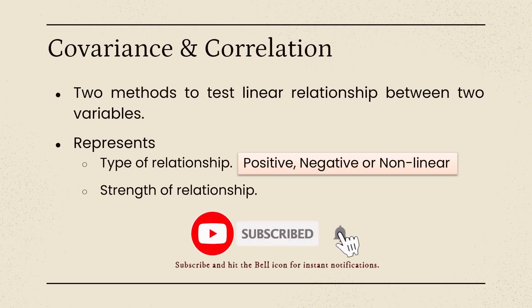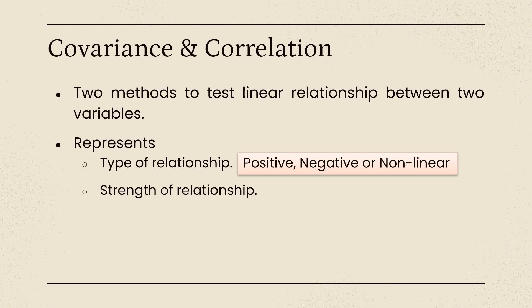Type of the relationship means whether two variables are having a positive relationship, negative relationship, or nonlinear relationship. Nonlinear relationship means both variables are not having any linear relationship between them. Strength of the relationship means whether both variables are having a perfect relationship, strong relationship, or weak relationship.